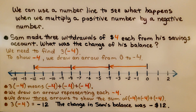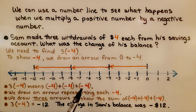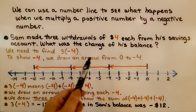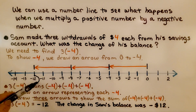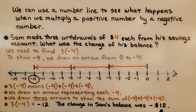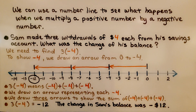Three times negative four means negative four plus negative four plus negative four. So we draw an arrow representing each negative four — we have one, two, three. That's three times negative four. Three times negative four is equal to negative twelve. The change in Sam's balance was negative twelve dollars. Notice that when writing negative twelve dollars, we have the negative sign, then the dollar sign, then the twelve.